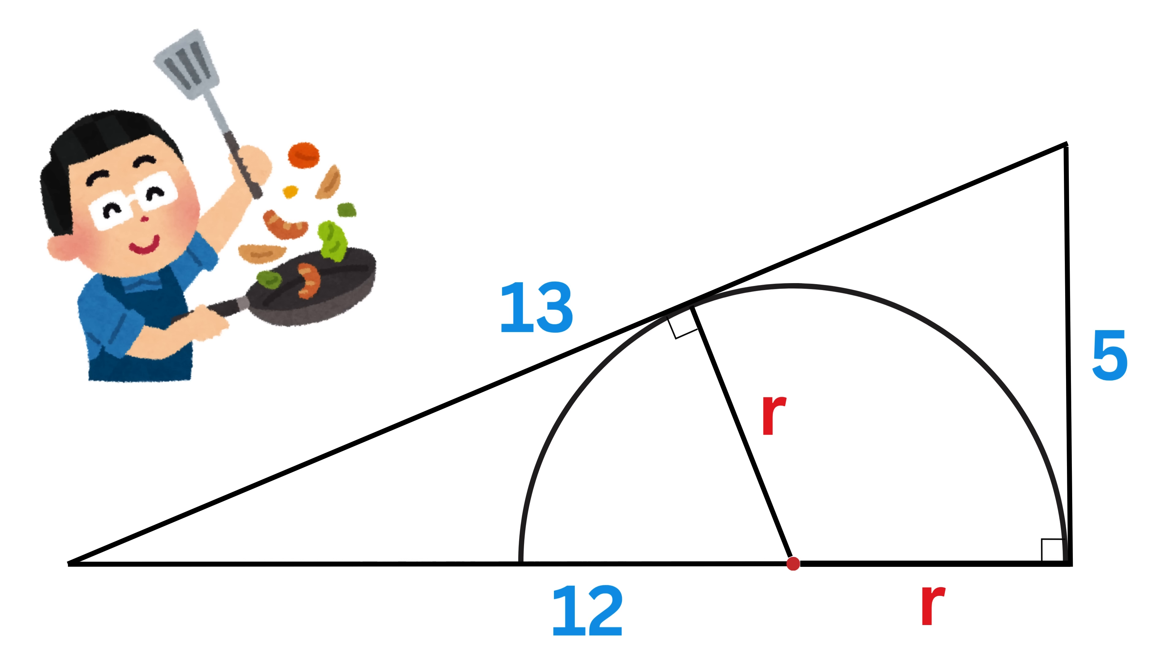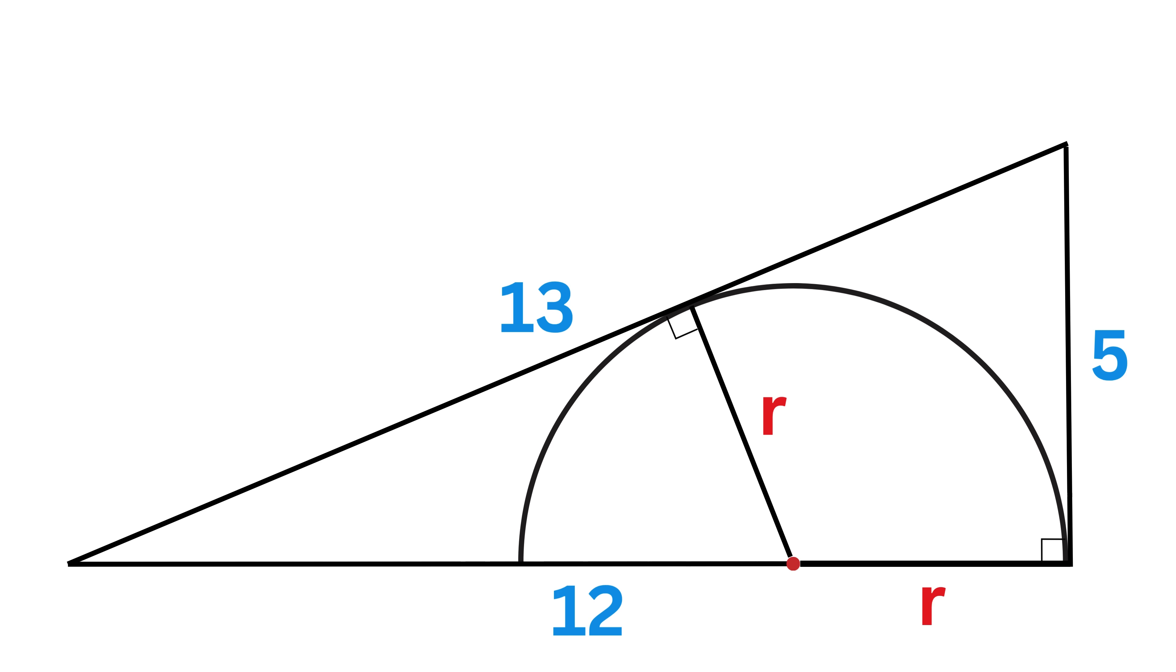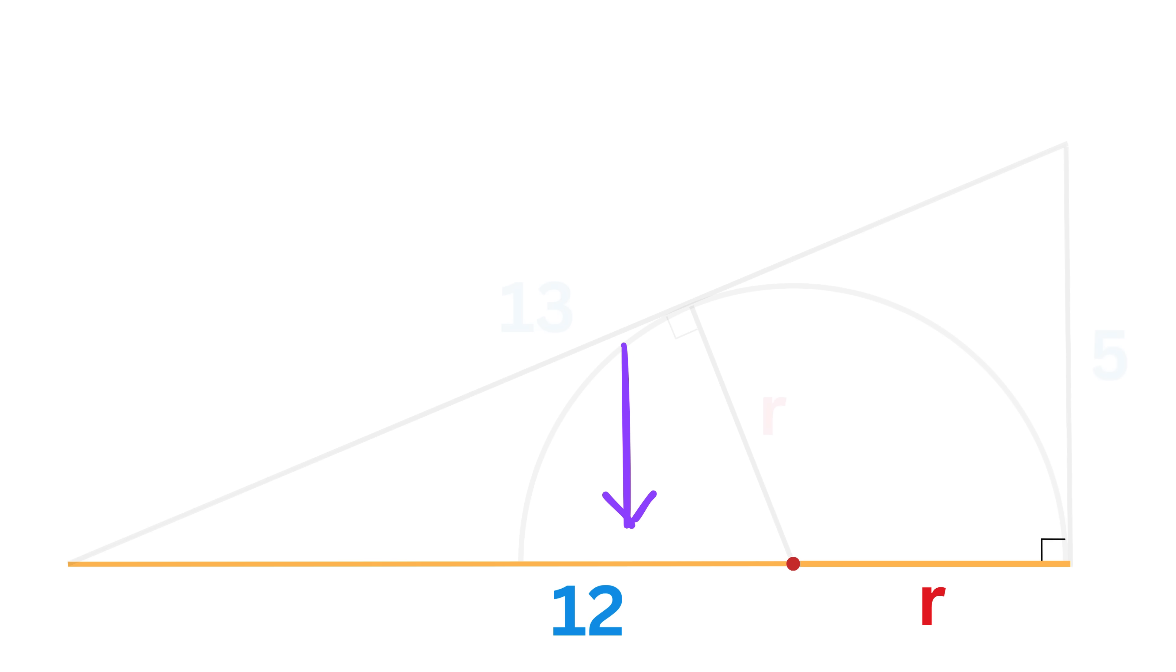We can observe that something is cooking up here because we can again use the Pythagorean theorem on this right triangle. For that, we have this side length in terms of R. If this is 12 units and this part is R, then this piece will be 12 minus R.